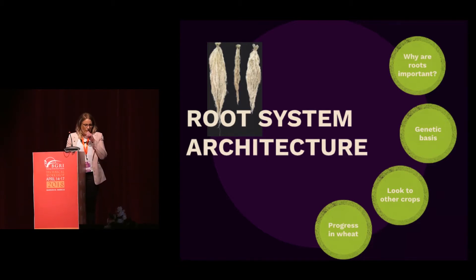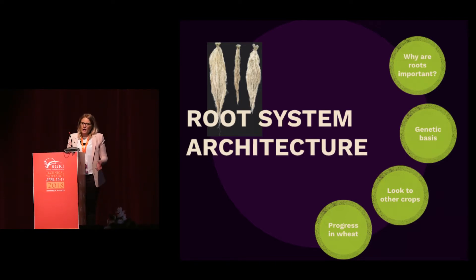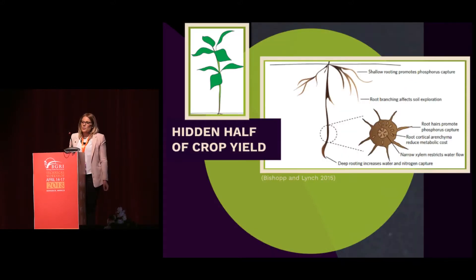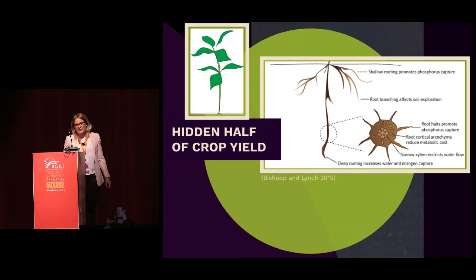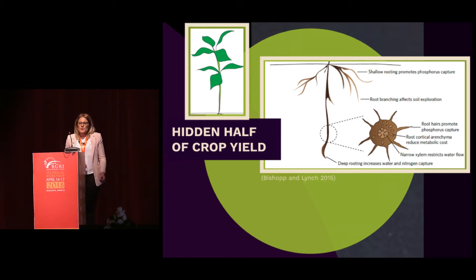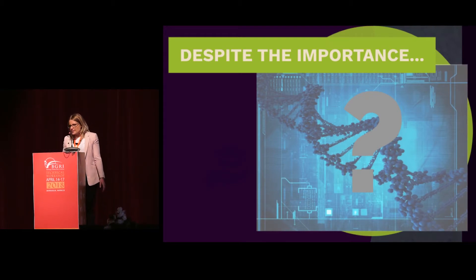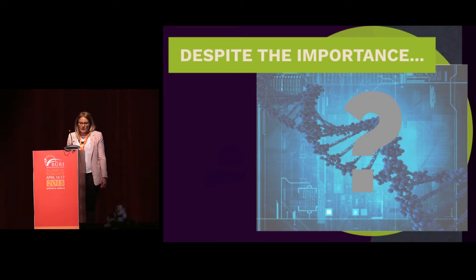Root system architecture is quite topical — we've already been hearing a little about roots, but today I'll cover why they're important, what their genetic basis is, what's happening in other crops, and where we're at with wheat. Some people suggest roots will pave the way to the second green revolution by developing root systems that access more nutrients with less metabolic cost. Despite their fundamental importance, the functional and genetic basis of root system architecture in major cereal crops is relatively unknown, largely due to difficulties with phenotyping.